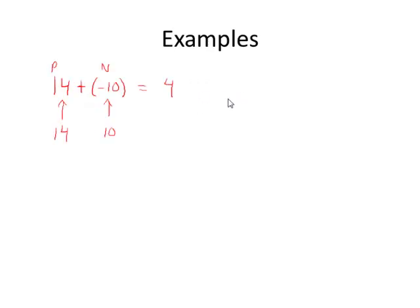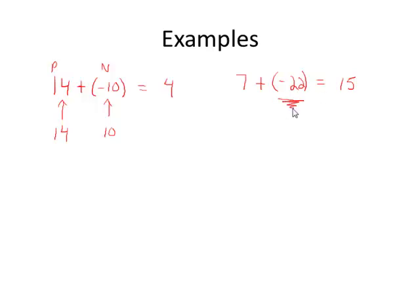Let me do one more example. Let's try 7 plus negative 22. Since we have a positive and a negative number, we want to find the difference between their absolute values, which is really a subtraction problem. The difference between 7 and 22 is 15. As for the sign of the result, the number with the larger absolute value was negative 22, so the sum is negative 15.